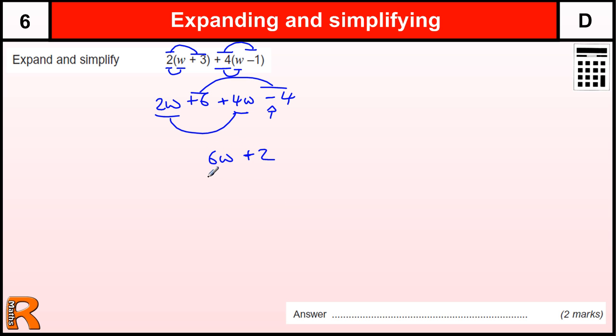You get one mark for getting to this stage, where you're allowed one sign error or one arithmetic error. So you must have three things correct. If you get to that, that's one method mark, and then there's an answer mark for the 6w plus 2.